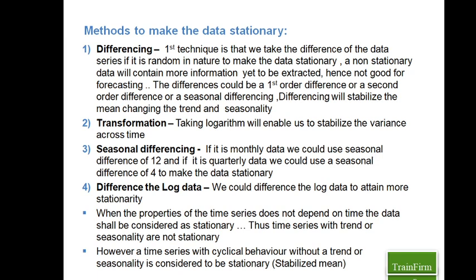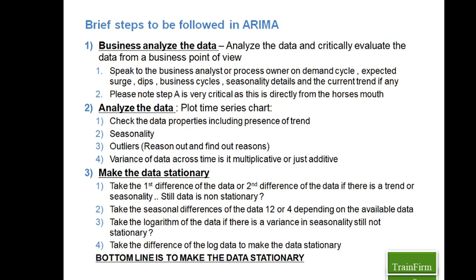As a rule of thumb: when the properties of a time series do not depend on time — meaning no trend and no seasonality — that's when we say the time series is stationary. However, there could be cyclical behavior in the data with no trend and no seasonality visible. If there are cycles in the data with no trend and seasonality, I can still consider that data as stationary, because if I put a mean line, that mean line will be a straight line across time.